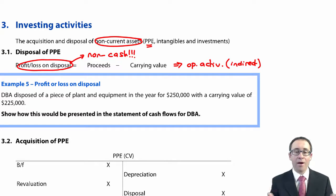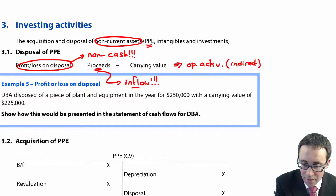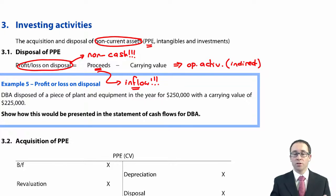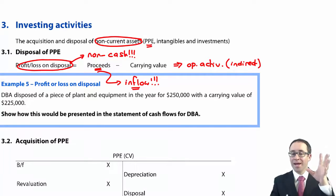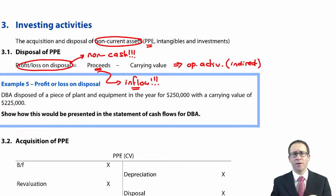Do be careful there. When you have the proceeds — the cash inflow — that may be required to calculate, the proceeds are the inflow from the disposal of PPE. Questions will give you two out of the three things. It could give you the profit or loss on disposal and the carrying value, in which case you work out the proceeds. If you're given the proceeds, that's the cash inflow from the disposal. But you would then need to work out the profit or loss on disposal, which goes in your operating activity. It covers both aspects — investing activities with the inflow from the proceeds, and operating activities with the non-cash expense or income.